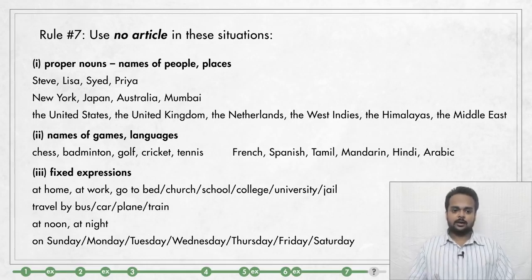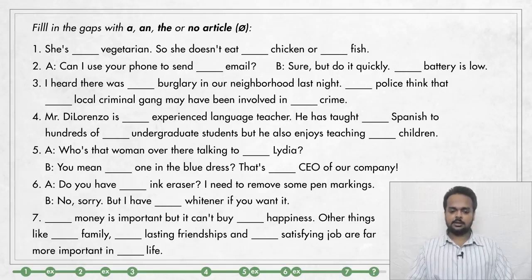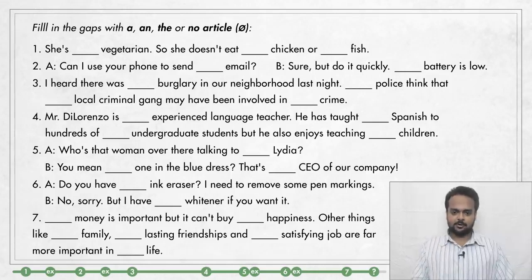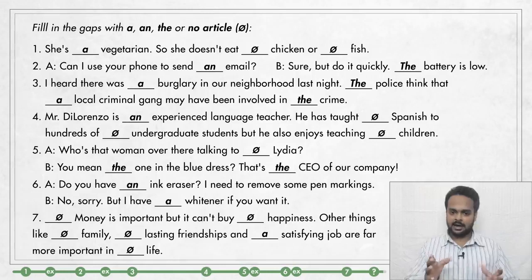Alright, if you're ready, it's time for a quiz to see if you can use articles correctly. On the screen you see some sentences with blanks. In each blank, put A, AN, THE, or no article — that symbol, the zero with a line through it, means no article. Stop the video, try the exercise, then play the video again and check. Here are the answers — stop the video and check them with your answers. In the comments section, let me know how many you got correct. If you're not sure about any of these, feel free to ask me in the comments and I will help you out. I hope you enjoyed this lesson. If you liked this video, hit the like button, don't forget to subscribe, and I will see you in the next lesson soon.